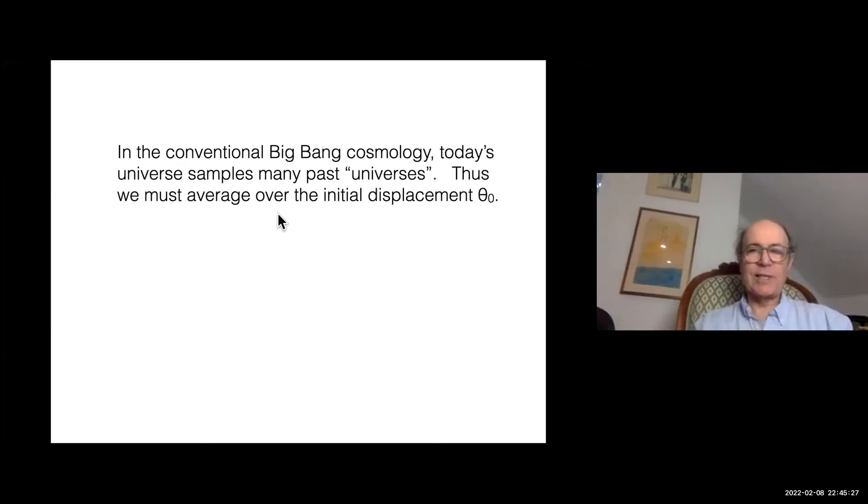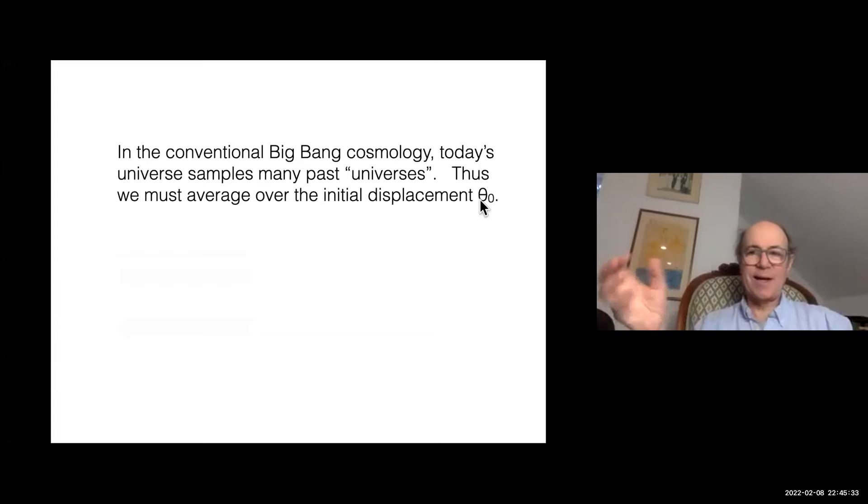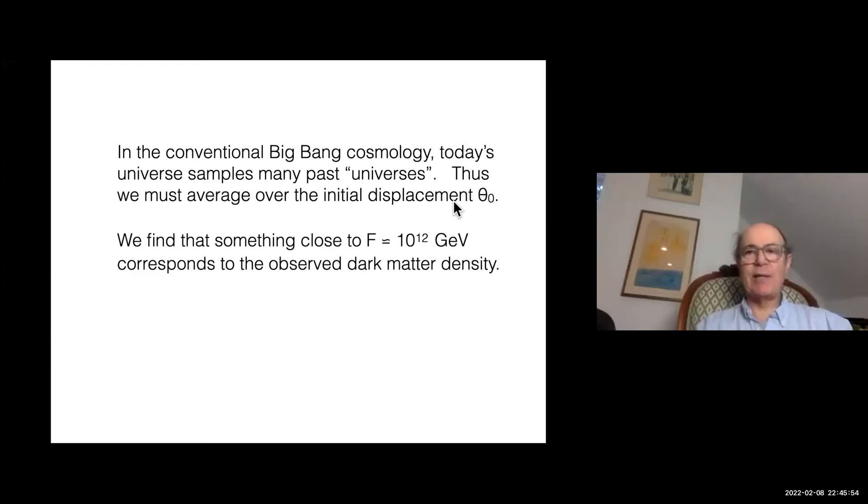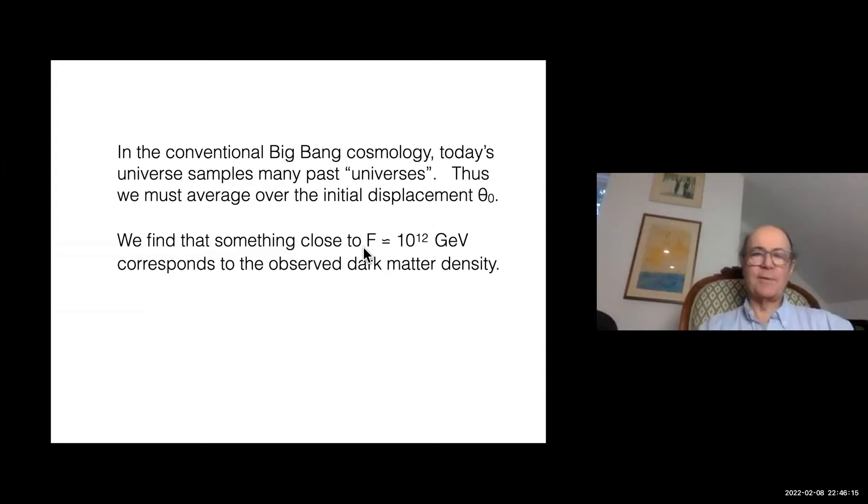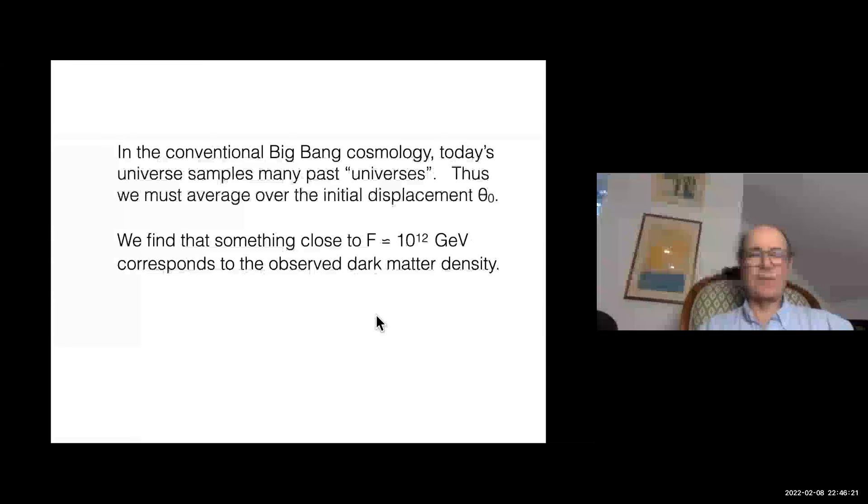We average over many independent samples when we look out at the sky. That takes care of the relevant unknown parameter in the cosmology, the unknown initial condition. That was the only thing that was really uncertain. Since we're supposed to average over it when we take large samples of the universe, we can calculate what value of F it takes to make the observed dark matter. Remember, the density is proportional to F roughly. It turns out to be roughly F equals 10 to the 12th GeV.